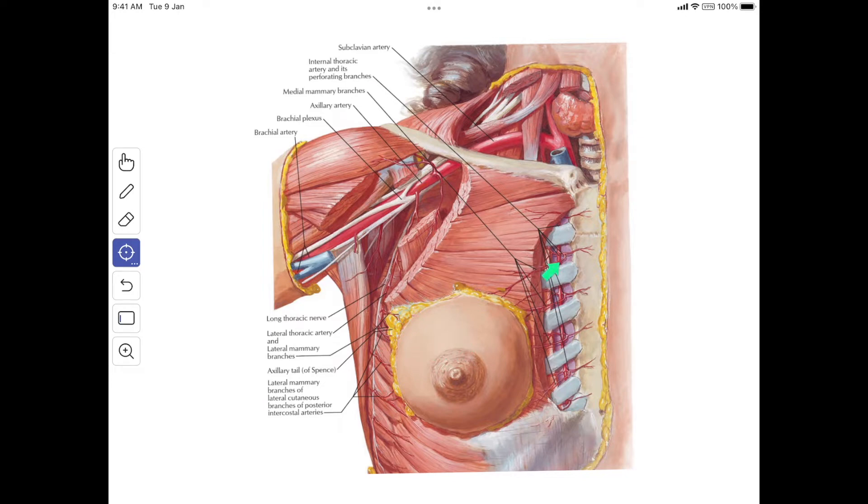Third are the perforating branches from the internal thoracic artery to the second, third, and fourth intercostal spaces. They form the medial mammary branches, which supply the medial part of the mammary gland.